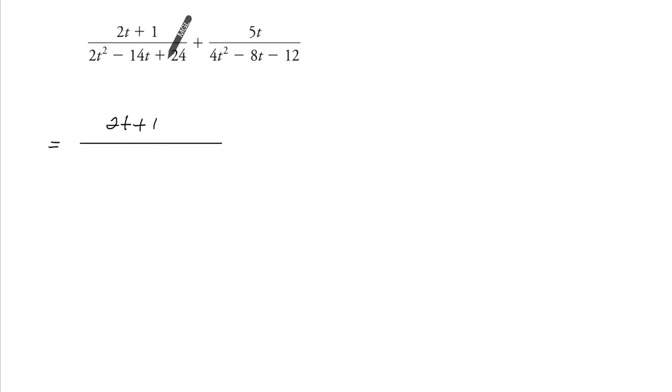So the bottom here actually first has a common factor of two. Because it has that two, it makes the factoring a little bit tougher. Once we factor that out, it'll be easier.